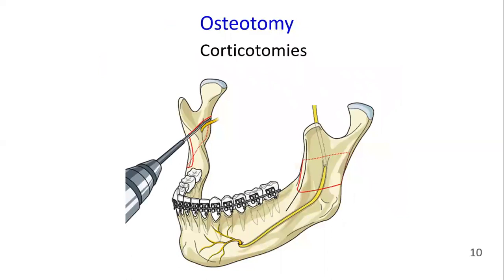The first cut is made through the lingual cortex, a few millimeters above the mandibular foramen, and it is parallel to the occlusion. Here you can see the mandibular foramen, and this cut is made a few millimeters above it. The corticotomy is extended from the anterior to the posterior border of the ramus.